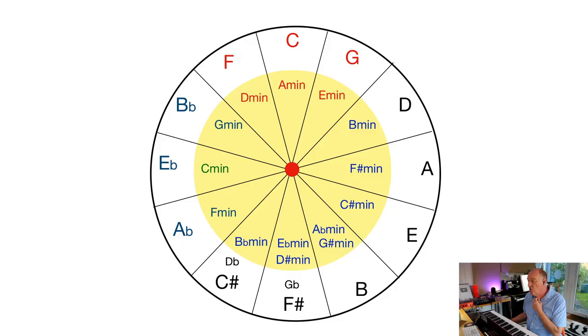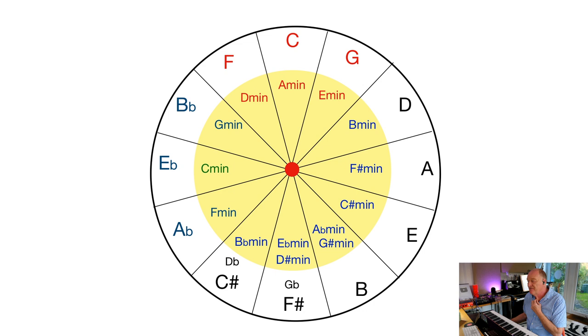You can see how the circle of fifths tells you what chords and keys are going to be most close to each other. So if you're not working in C — if you're in A, for example — this tells you that A, D, and E are good chords to use and easy keys to transition into, and that the minor chords you should be looking at are B minor, F sharp minor, and C sharp minor. This is where it starts to get useful.